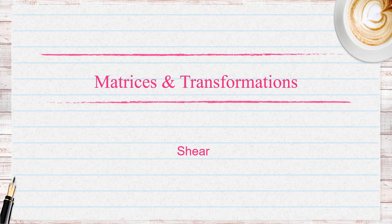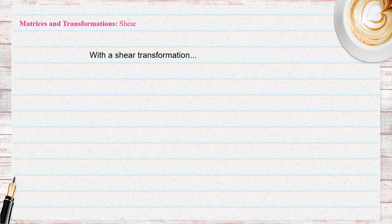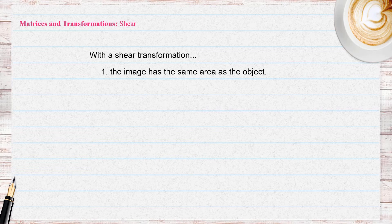In this lesson, we are going to be talking about the transformation shear. Now with a shear, the image formed has the same area as the object. And also, the direction of shear is parallel to the invariant line.